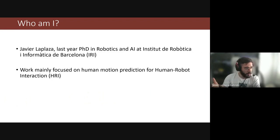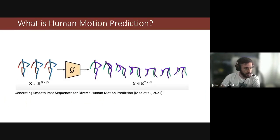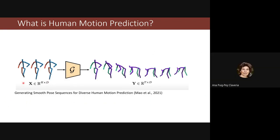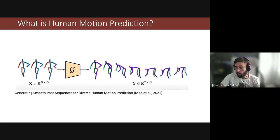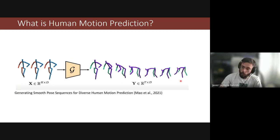After resolving the slide issue, we have this input sequence of different skeleton poses representing the body pose of the human. And with a general function G, not defined yet, we can get our output of the future motion of the human.